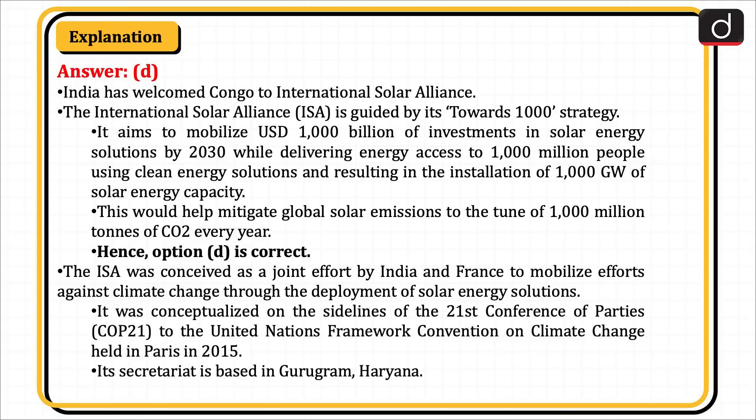Hence, option D is correct. The ISA was conceived as a joint effort by India and France to mobilize efforts against climate change through the deployment of solar energy solutions. It was conceptualized on the sidelines of the 21st Conference of Parties, or COP21, to the United Nations Framework Convention on Climate Change held in Paris in 2015. Its secretariat is based in Gurugram, Haryana.